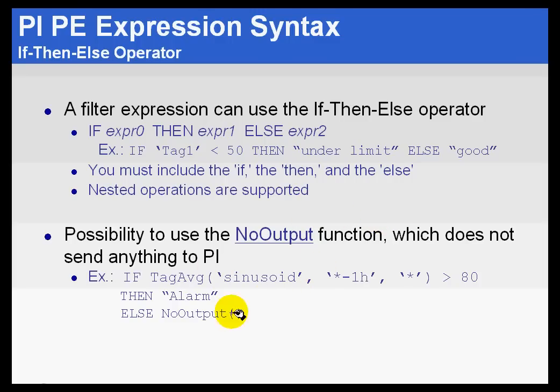It is actually possible to specify a function that doesn't send anything to PI. For example, if I would like to have a value go into alarm at a certain stage, like if the average of sinusoid is greater than 80 during the last hour, then I can specify that. I can say then alarm, and it will take the digital state alarm, else no output. So no output basically says don't do anything.